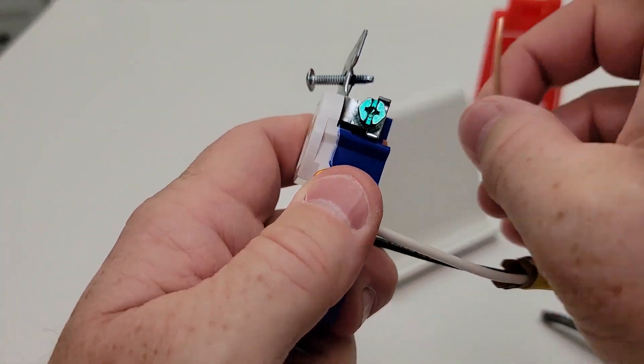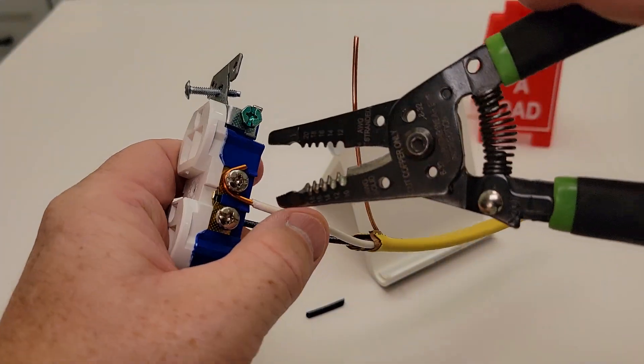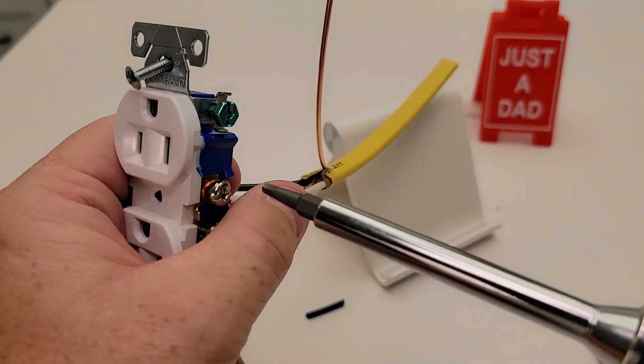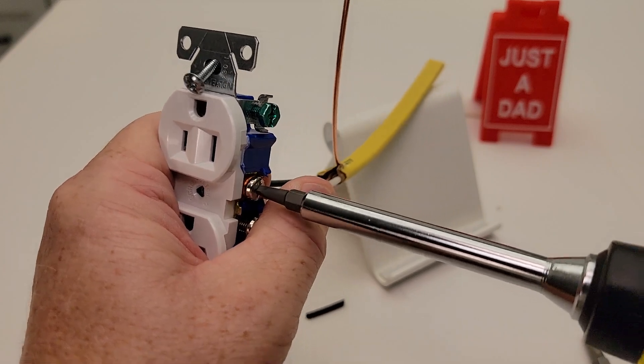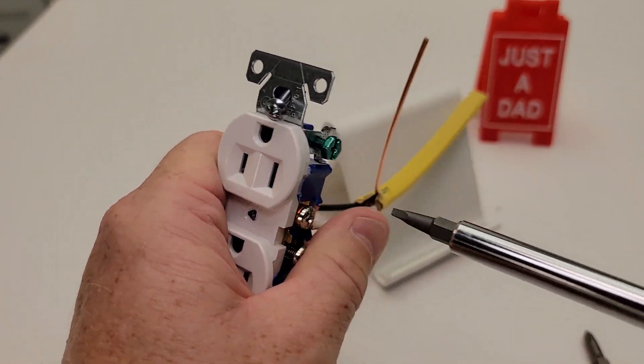Come over here, put it on there. Then just finish the loop. I like to give it a really nice, secure connection. You can use straight slot or Phillips, but this one, you can really get it nice and tight.